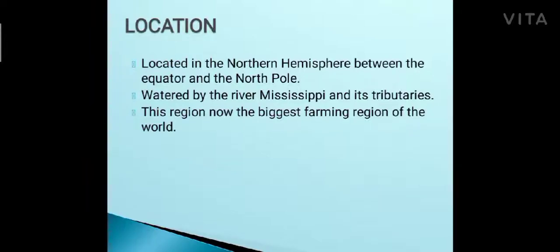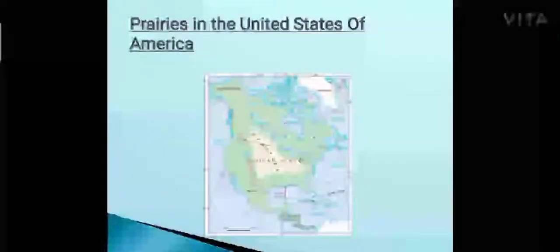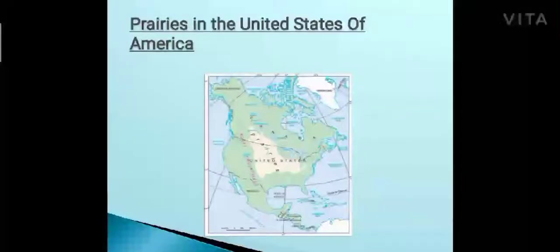The prairies are situated in the temperate zone, watered by the river Mississippi and its tributaries. This is now the biggest farming region of the world because the treeless grasslands have been turned into farming areas. This is the map of prairies in the United States of America.